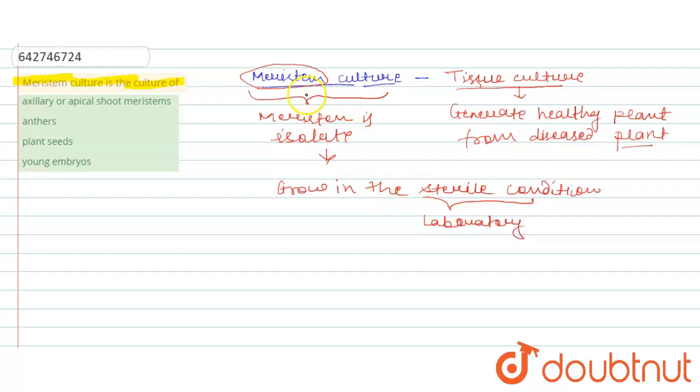Why do we isolate the meristem? Let's understand about this concept. Because the meristem of diseased plant is protected.